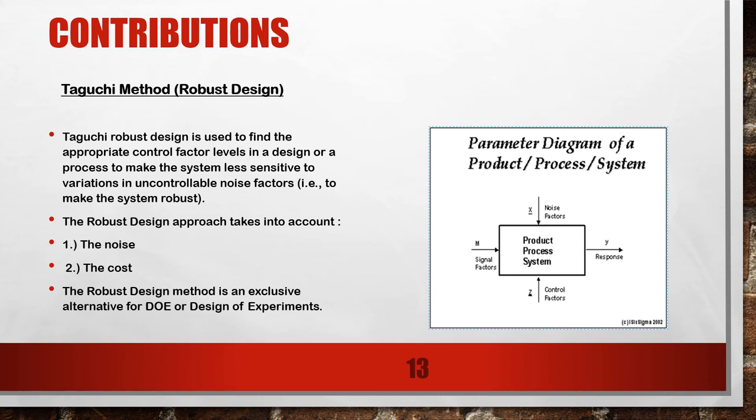Taguchi method, robust design. Taguchi robust design is used to find appropriate control factor levels in a design or process to make the system less sensitive to variations in uncontrollable noise factors, that is, to make the system robust. The robust design approach takes into account: one, the noise, considered as variation from environmental to manufacturing and component failure; two, the cost, considered as the rate of deterioration in the area. The robust design model is an exclusive alternative for design of experiment. To the right, you will see the parameter diagram of a product or system.